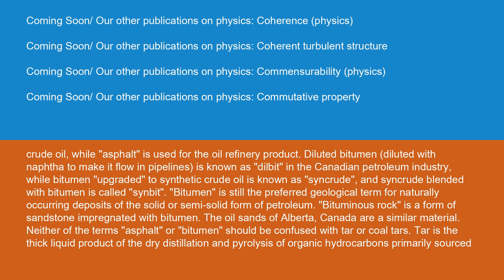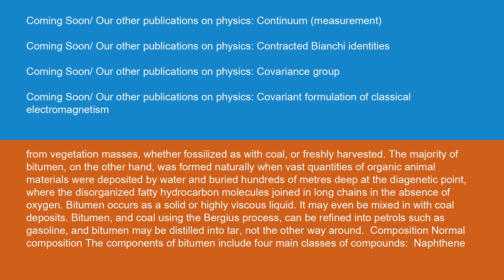Bitumen is still the preferred geological term for naturally occurring deposits of the solid or semi-solid form of petroleum. Bituminous rock is a form of sandstone impregnated with bitumen. The oil sands of Alberta, Canada are a similar material. Neither of the terms asphalt or bitumen should be confused with tar or coal tar. Tar is the thick liquid product of the dry distillation and pyrolysis of organic hydrocarbons primarily sourced from vegetation masses, whether fossilized as with coal or freshly harvested.